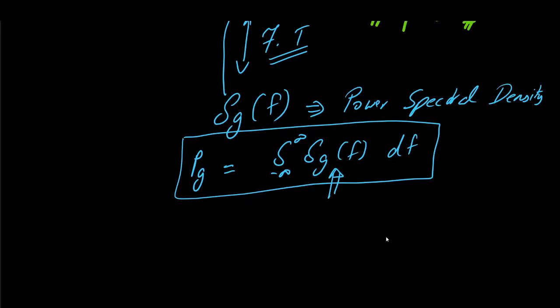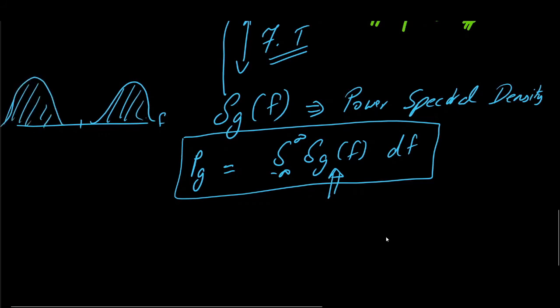And the amount of power which is available in a given spectrum, that is if we plot a spectrum, we can find the amount of power which is available from frequency f1 to f2 by means of this PSD, power spectral density.